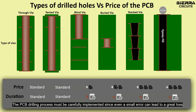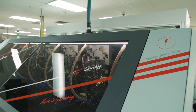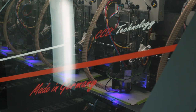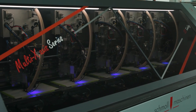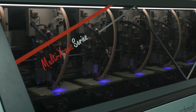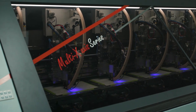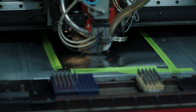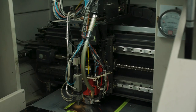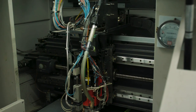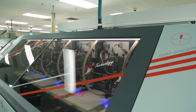The PCB drilling process must be carefully implemented since even a small error can lead to a great loss. Our drilling facility operates 24 hours a day using top-of-the-line machines. We also have vision drill capabilities which allows for plus or minus 1 mil tolerance on hole placement. And while each drill bit can withstand 300 hits, Sierra changes bits at 200 hits, because drilling a clean hole is critical to quality.